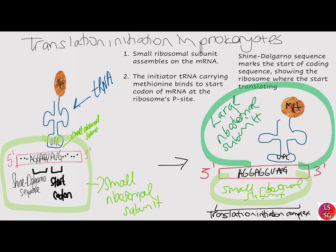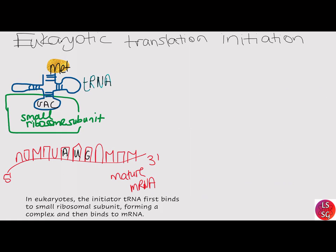The Shine-Dalgarno sequence interacts with the ribosomal RNA that composes the ribosome, anchoring the 30S subunit to the correct mRNA location. The initiator transfer RNA carrying methionine binds to the start codon of the messenger RNA at the ribosome's P-site, and then the large ribosomal subunit joins the complex, forming the translation initiation complex. In eukaryotes, the initiator transfer RNA first binds to the small ribosomal subunit forming a complex, then it binds to messenger RNA for translation initiation.